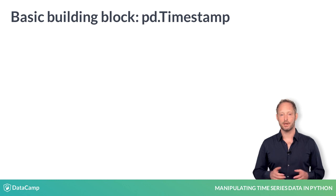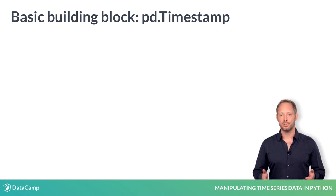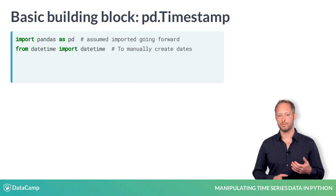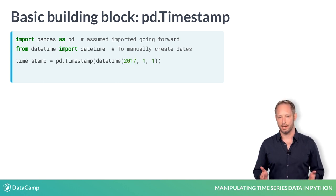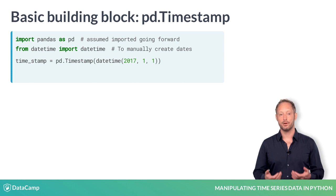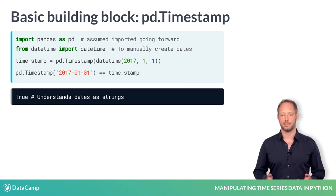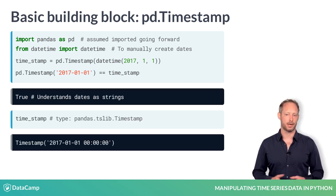Let's first take a look at these data types. Using the Pandas library and Python's built-in datetime class, you can create a Pandas timestamp. You can also use a date string instead of a datetime object. Both produce the same result.